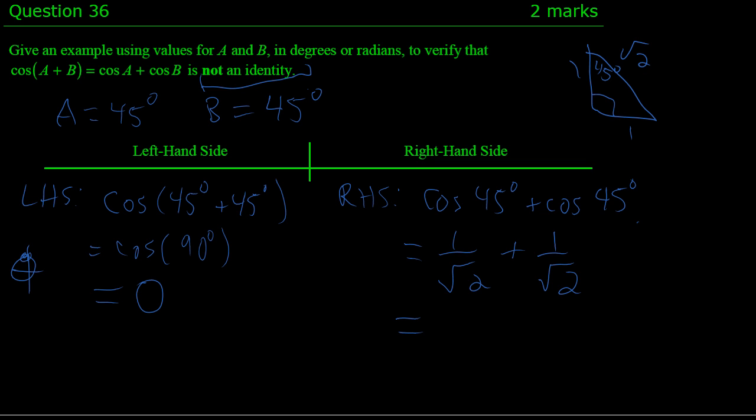And then we would ask ourselves, how many 1 over root 2's do we have? If I have 2 over root 2, which if you would like to rationalize, you get 2 root 2 over 2, which is simply root 2.